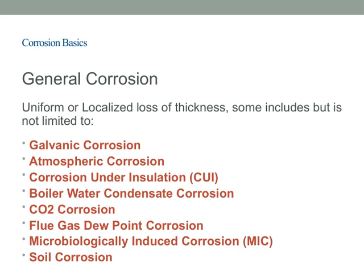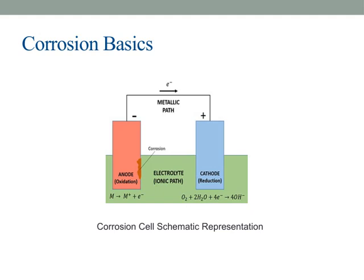All these types of corrosion, whether uniform or localized, highlight how diverse and pervasive corrosion can be. Understanding these different forms is crucial because each one requires specific strategies for prevention and control. Recognizing these types helps us better protect our assets and extend their lifespan.